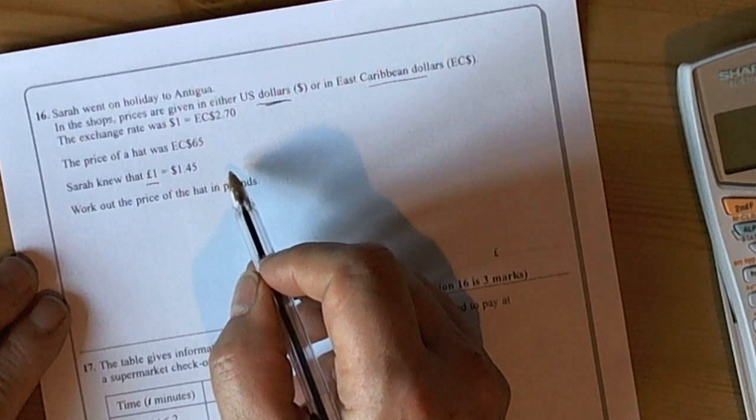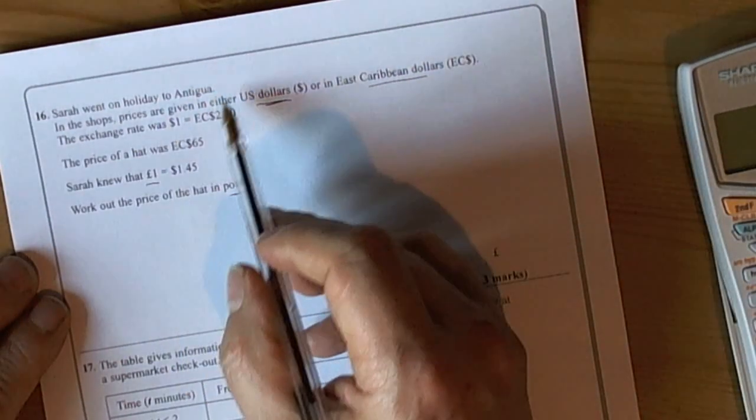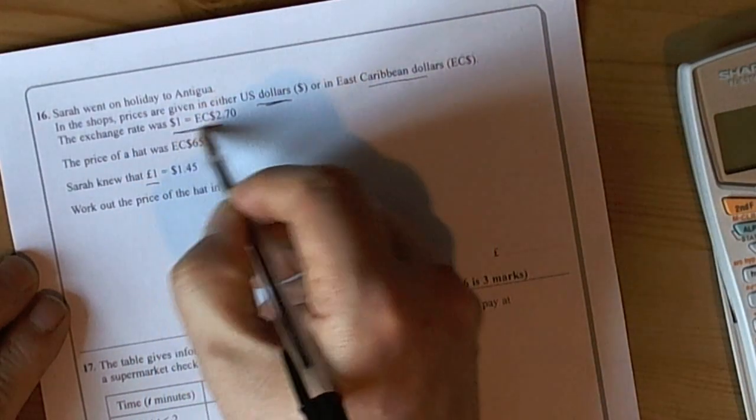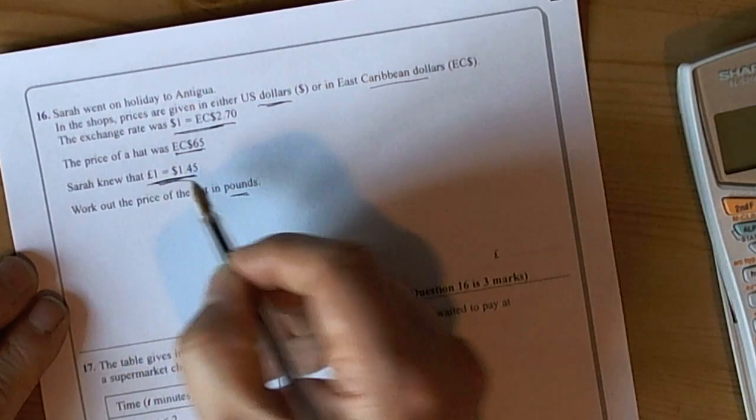We look at what the question actually wants - it's asking us to work out the price in pounds. Now we read the question carefully and look for some key information. We've got the exchange rate here, the price of the hat, and another exchange rate here.